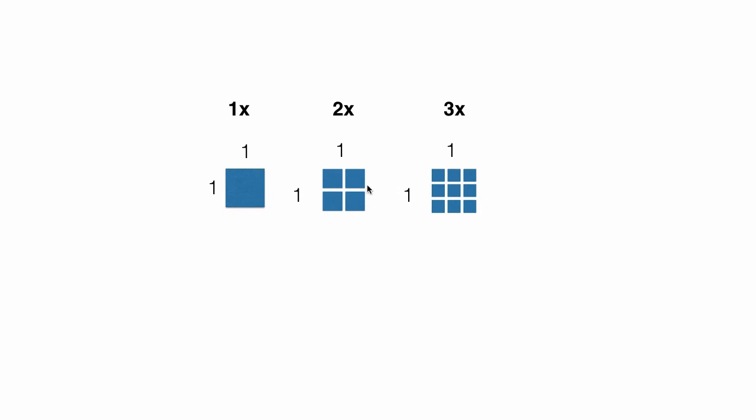...it's essentially a scale. It's a higher pixel density putting more pixels into that one point. So 1x means one pixel fits into that one point, 2x means four pixels fit into one point, and 3x means that nine pixels fit into one point.